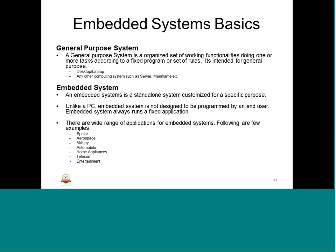There are two kinds of systems: the general purpose system and the embedded system. A general purpose system is an organized set of working functionalities doing one or more tasks with a fixed program or set of rules — for general computing, calculation, or basic development. Examples include desktops, laptops, servers, and mainframe computers. These are large computing systems, all categorized under general purpose systems.